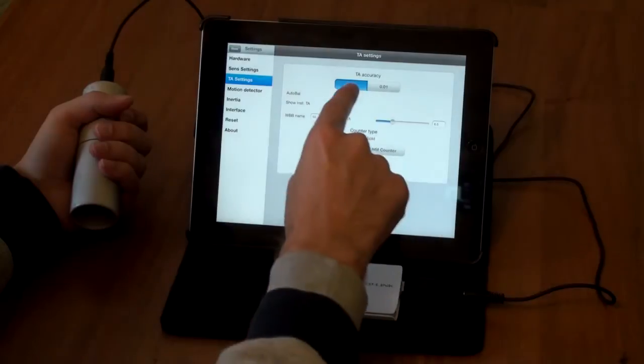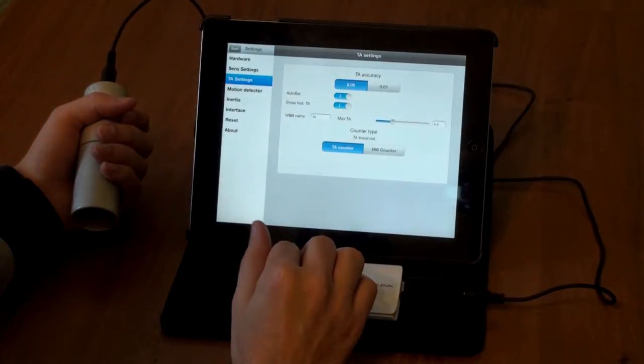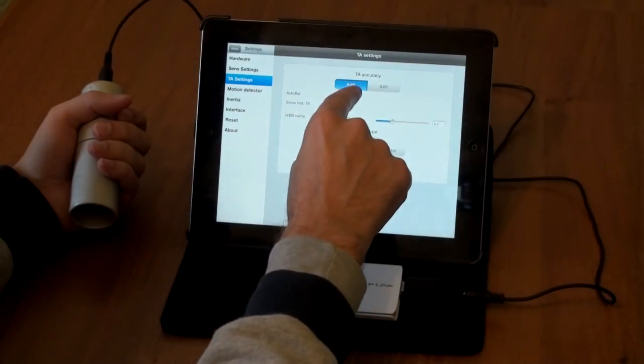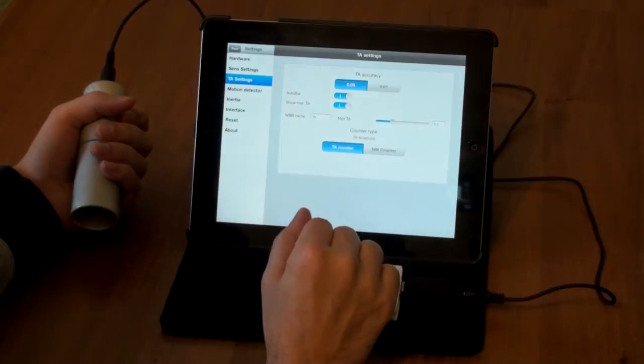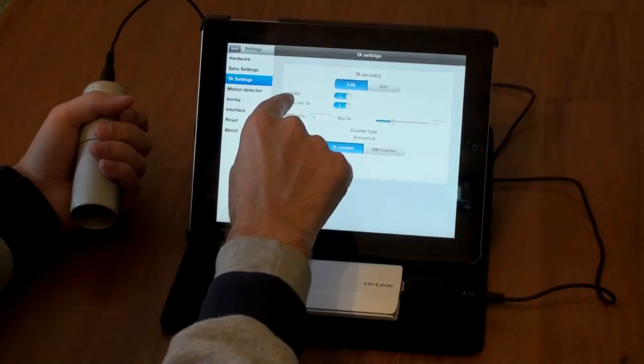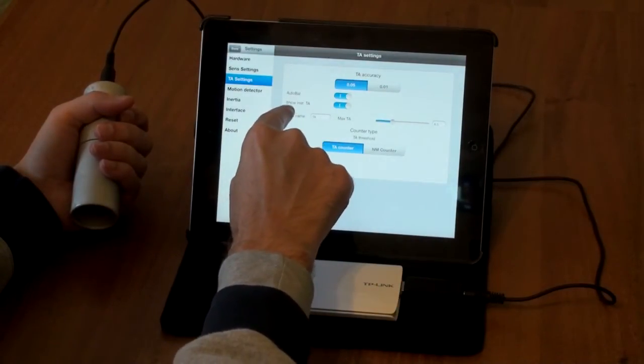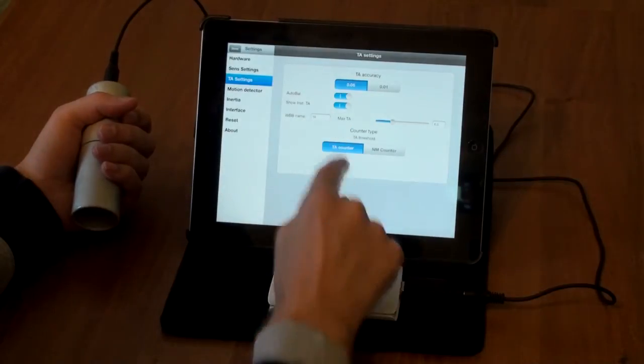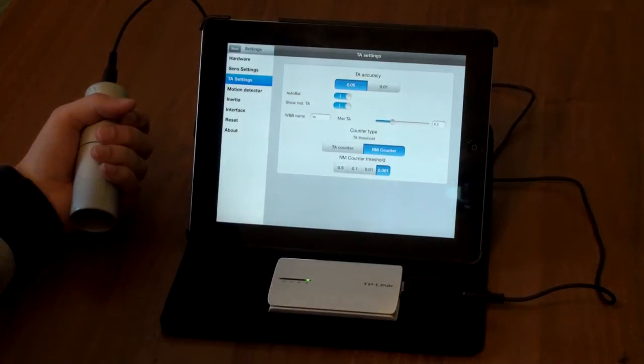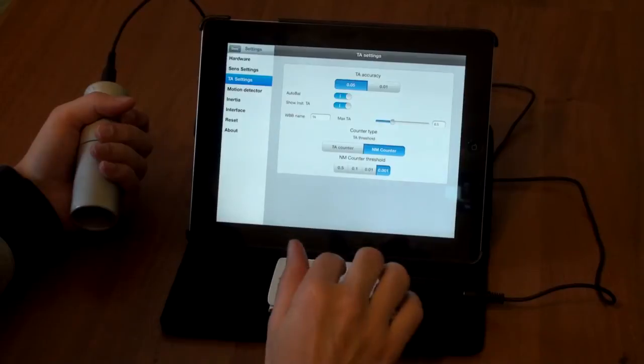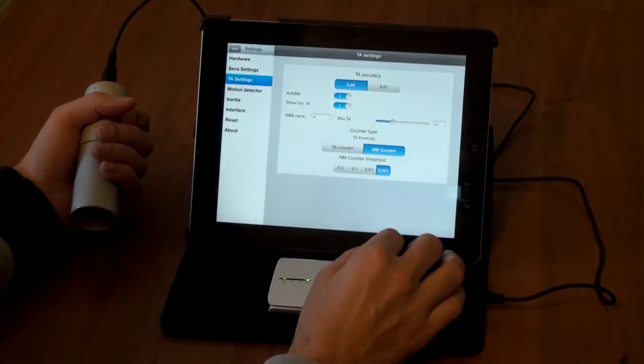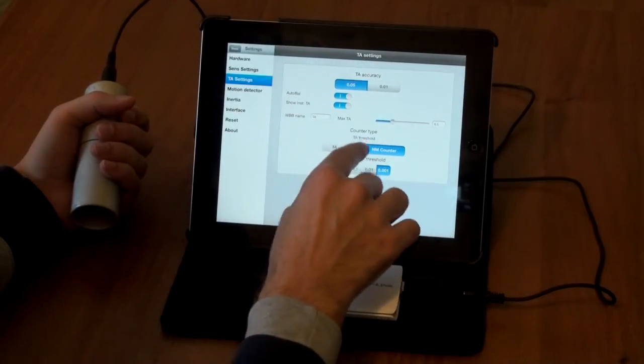TA settings. Here is accuracy of indication, of TA indication. 005 or 001. Auto balance or auto set function. Show instant TA. TA counter and needle movement counter. It counts every needle movement. Sometimes it's very interesting and very useful.